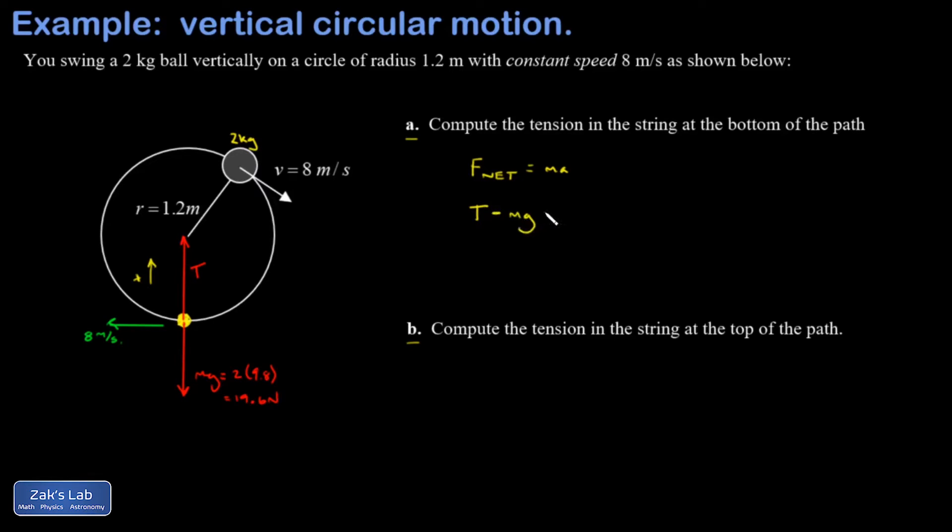That mg is going to count as negative and then my acceleration is given by v squared over r in order to curve the path of this thing into a circle.